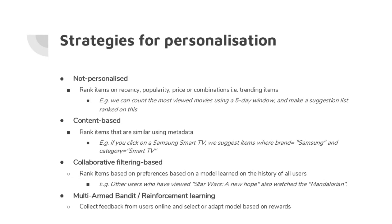The second category is content-based recommendations. Here we make recommendations using available metadata, basically ranking items that are similar using that metadata. For instance, if you click on a Samsung smart TV, you get suggestions of other smart TVs where the brand is also Samsung — that's a typical content-based recommendation.